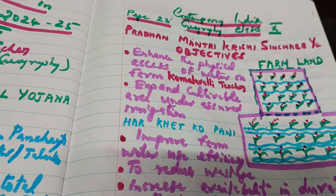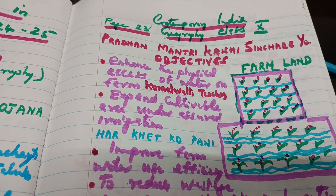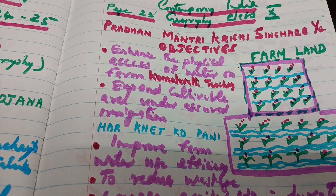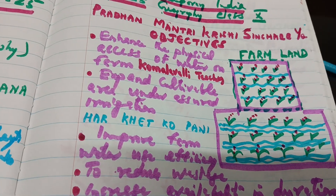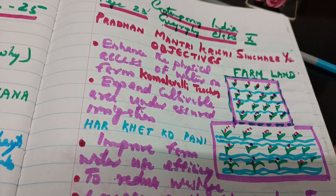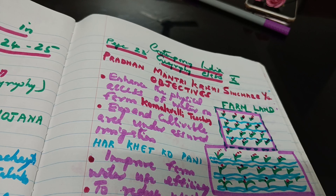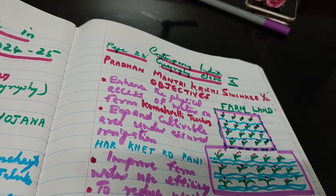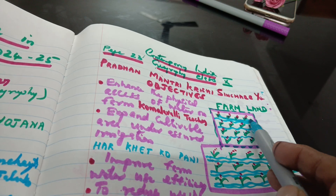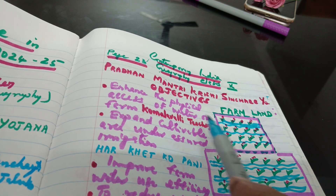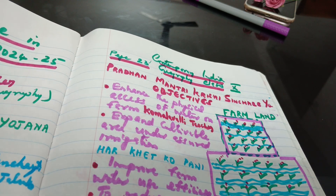Then, also in Geography, we have the Pradhan Mantri Krishi Sinchayee Yojana. The objectives include: first, to enhance the physical access of water on farmland.